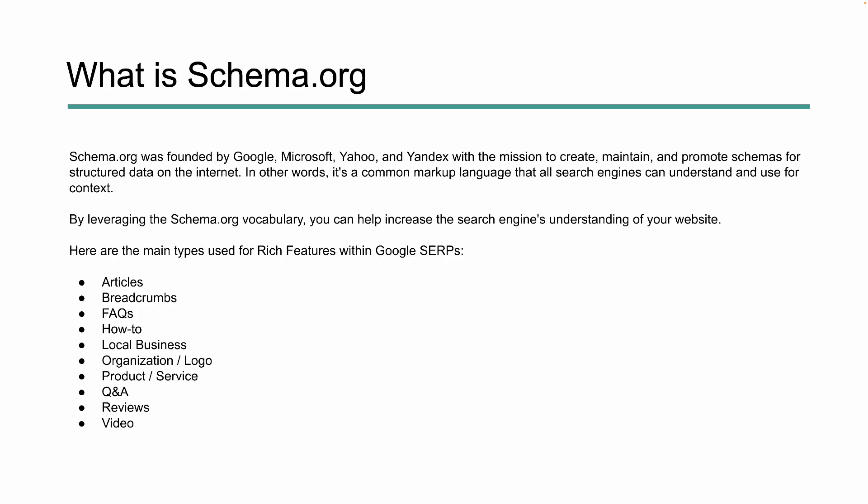When you use structured data properly, you can earn certain rich features within Google SERPs. Some of the more prominent ones include article, breadcrumb, FAQs, how-to, local business, organization markup — which Google actually calls logo — and you can extend that further with organizational markup. You can also do products and services, question and answer, reviews, video, and a whole lot more.